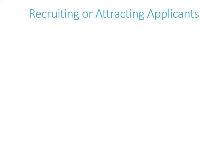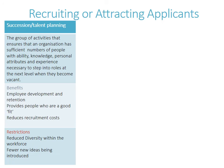There are many methods of recruiting or attracting applicants; three are outlined here. The first is succession or talent planning. This is the group of activities that ensures an organisation has sufficient numbers of people with ability, knowledge, personal attributes and experience necessary to step into roles at the next level when they become vacant.